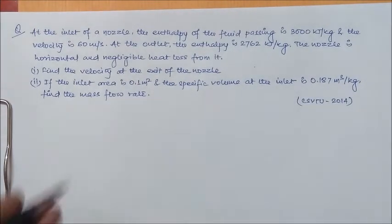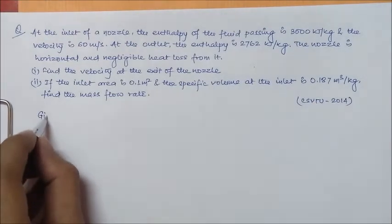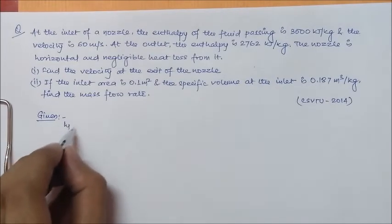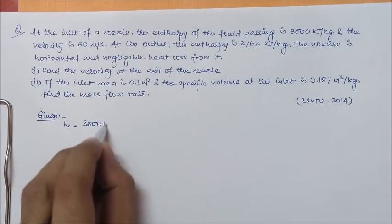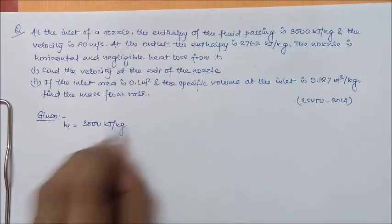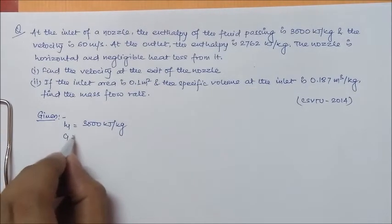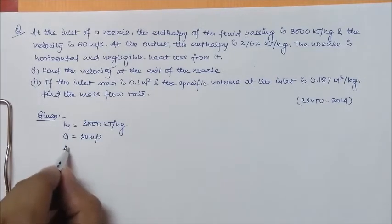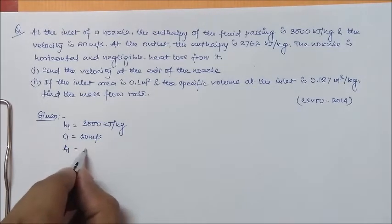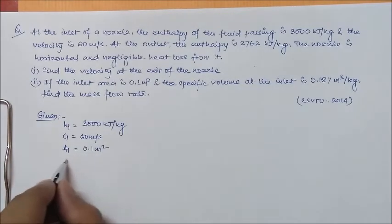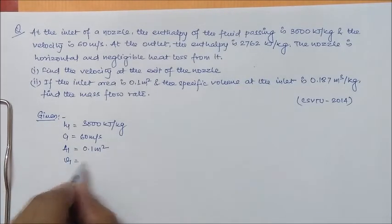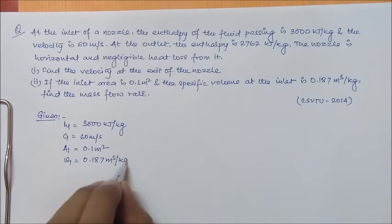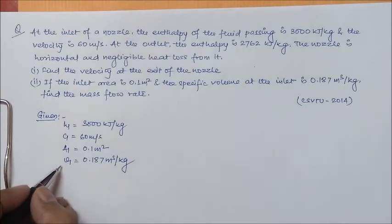So, let's start. Given things, first, H1 we have 3000 kJ per kg. We have C1 as 60 m per second. A1, that is the inlet area, as 0.1 m². Specific volume at the inlet as 0.187 m³ per kg. These are the given values at the inlet.